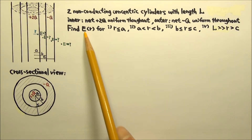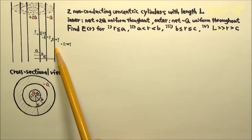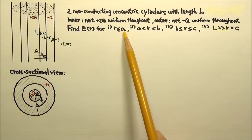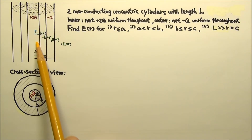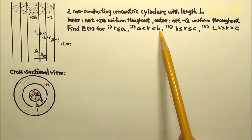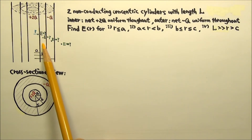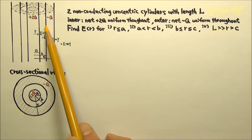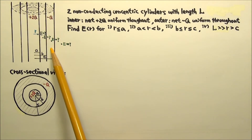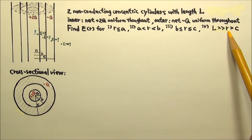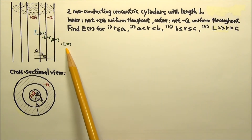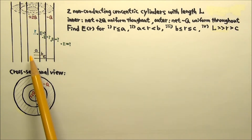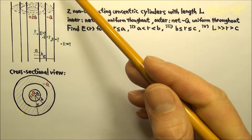Find the electric field as a function of R near the midsection of the two cylinders. Region 1: R ≤ A, inside the inner cylinder. Region 2: A < R < B, between the two cylinders. Region 3: B < R < C, inside the outer cylinder. Region 4: R > C, outside both cylinders. The length L is much, much greater than R, so the cylinders are much longer than the radial distances considered.